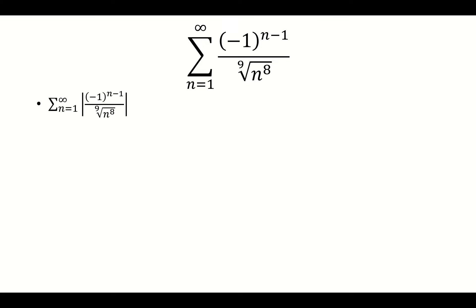So we're going to start off with absolutely. If it converges absolutely, we're done. For this test, we have to look at the absolute value of negative 1 to the n minus 1 over 9th root of n to the 8th. The absolute value with the negative 1 to the n minus 1st power is going to make it positive 1.